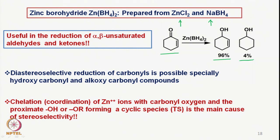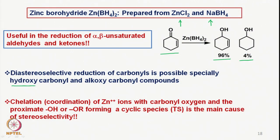This is very interesting because it has been reported in the literature that zinc borohydride allows a highly diastereoselective reduction of carbonyl compounds if there is a hydroxy group or an alkoxy group present in the vicinity of the particular carbonyl group to be reduced. It allows the reduction to take place due to the coordination of zinc ions with the carbonyl oxygen and also to the proximity-based OH or OR group, thus forming a cyclic transition state. That is the reason why there is a very high stereoselectivity or diastereoselectivity depending on the molecule.